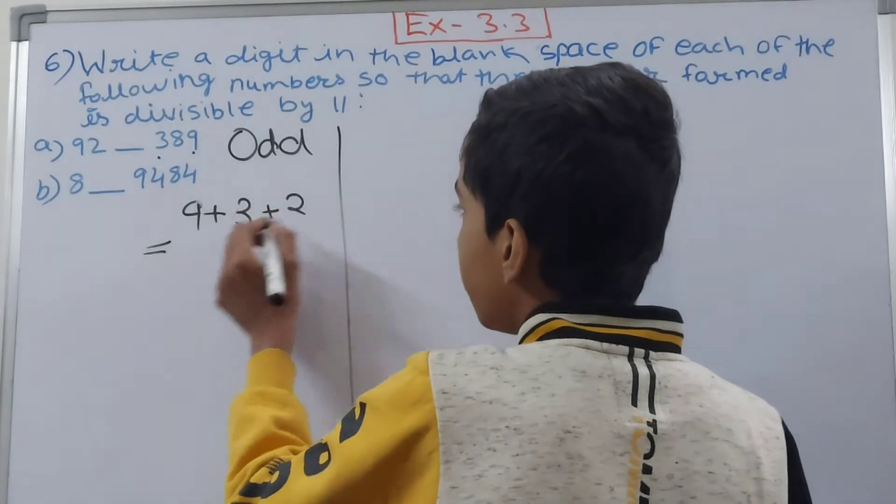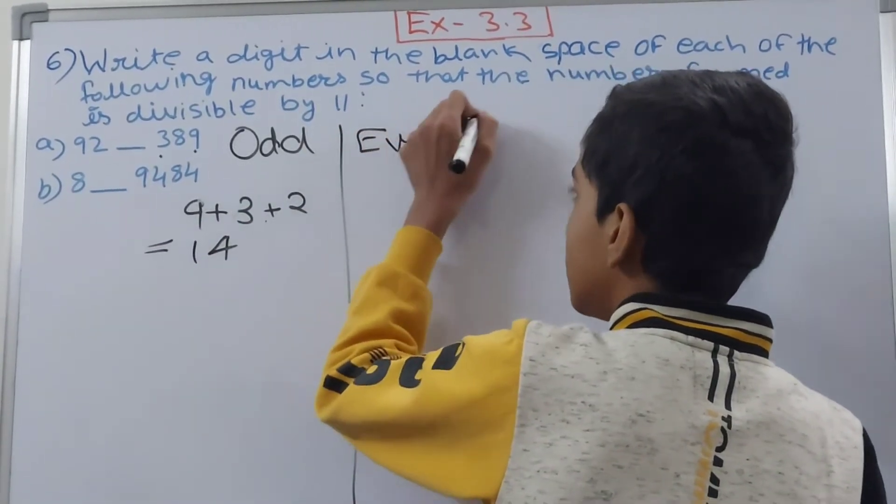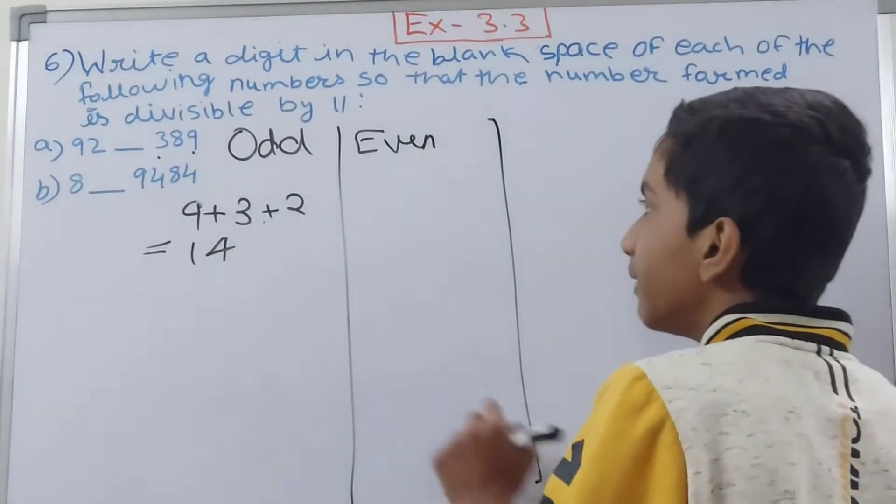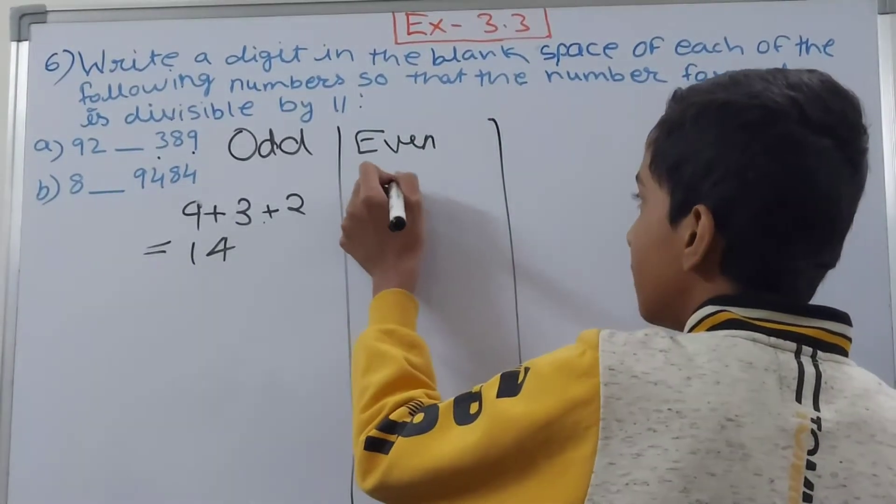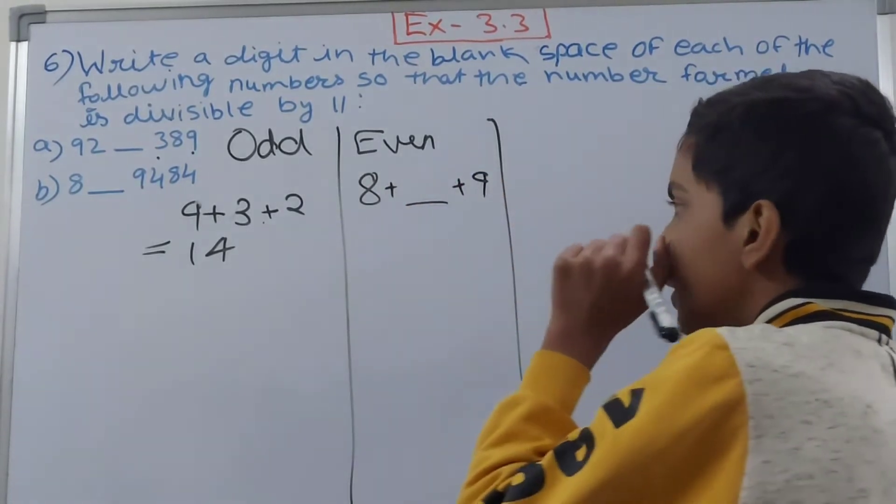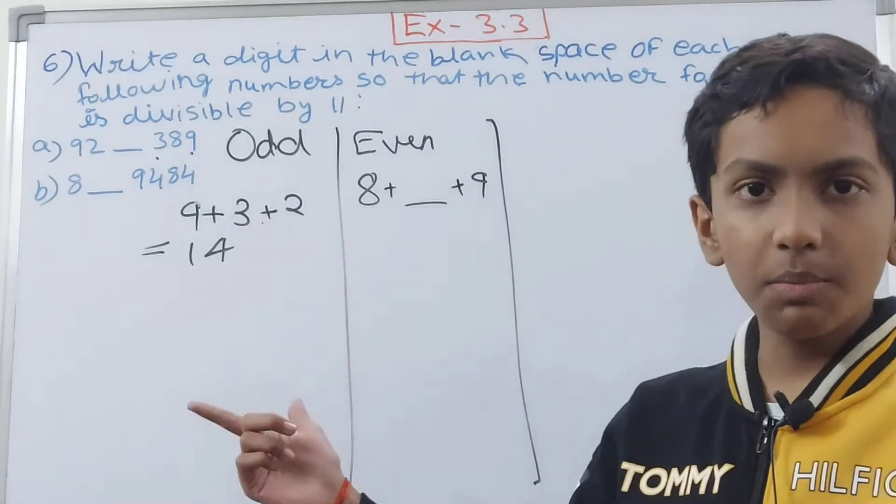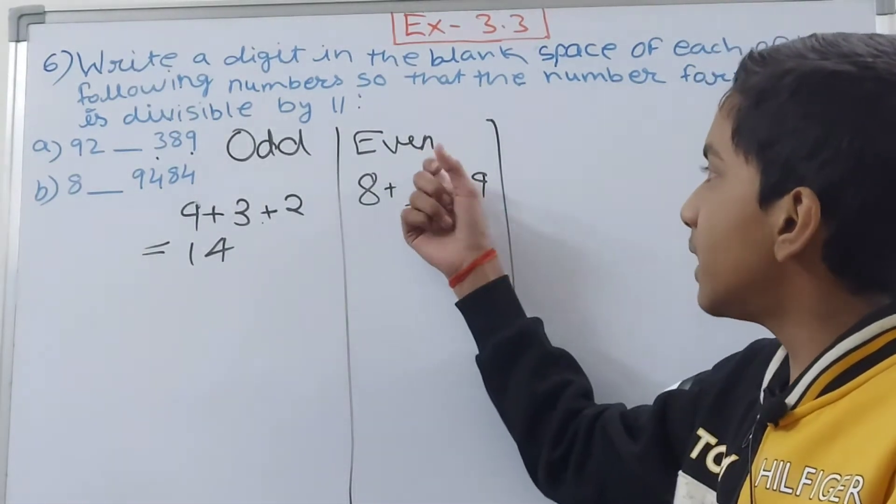And for the even places we have 8, and for this blank we will leave it blank first, and plus 9. So we have 14 at the odd places. We need to find this digit at the even places so we will get our answer.